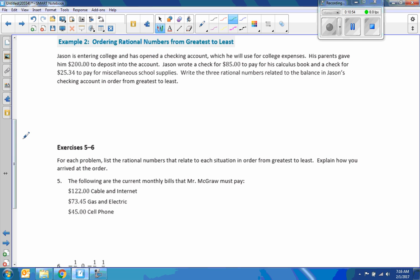Example 2. Ordering rational numbers from greatest to least. So be careful. Now we're going large to small. Jason is entering college and has opened a checking account, which he will use for college expenses. His parents gave him $200. That's a positive. That's a deposit into the account. He wrote a check for $85 for his calculus book and a check for $25.34 to pay for his school supplies. Write the three rational numbers related to the balance of Jason's checking account in order from greatest to least.